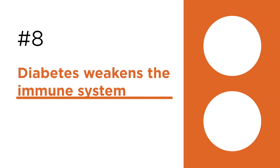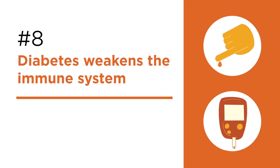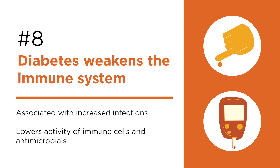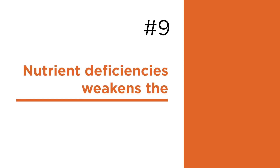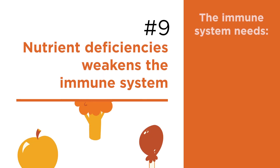Number eight: diabetes. People with diabetes experience more infections and more complicated infections than those without diabetes. Diabetes weakens the immune system by lowering the activity of certain immune system cells as well as antimicrobials.